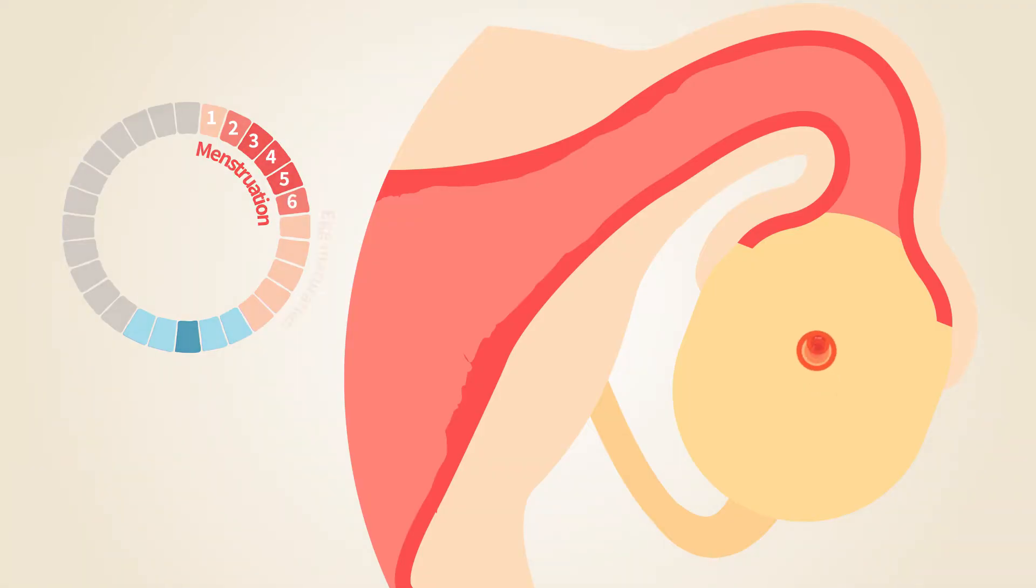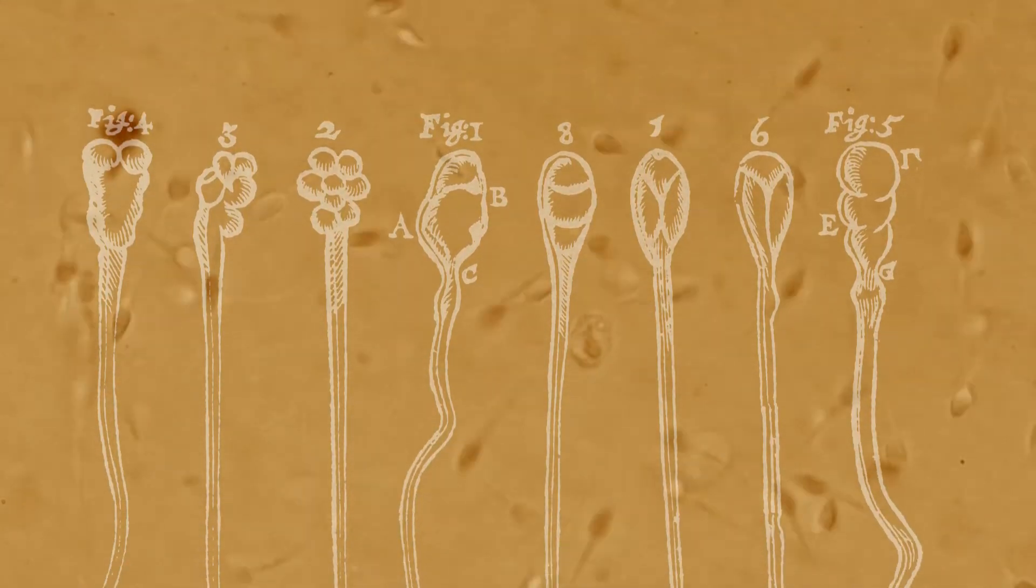After describing how eggs mature in the female ovary, we will now describe how sperm is produced in male testicles.